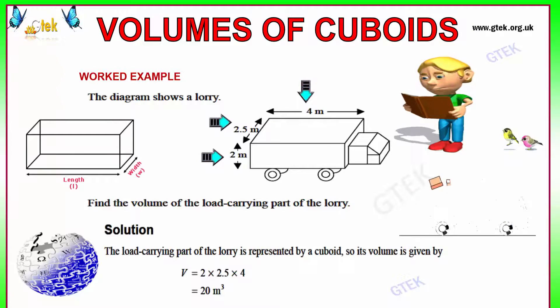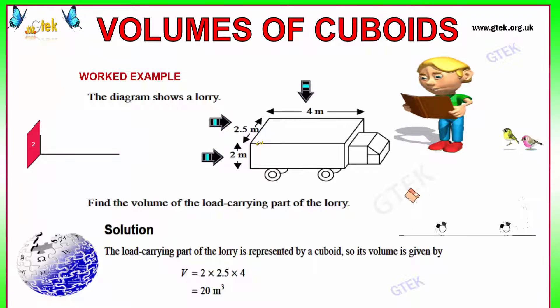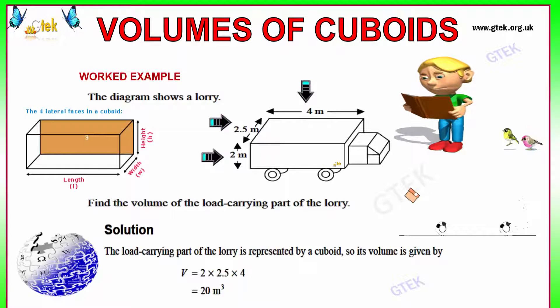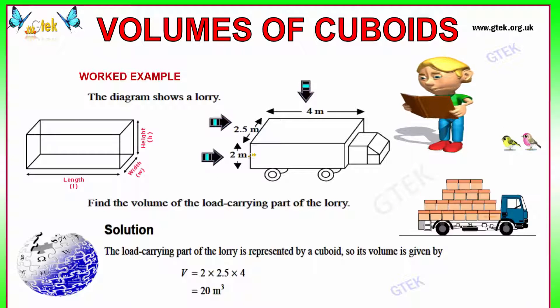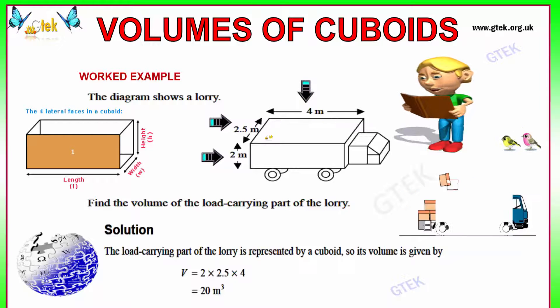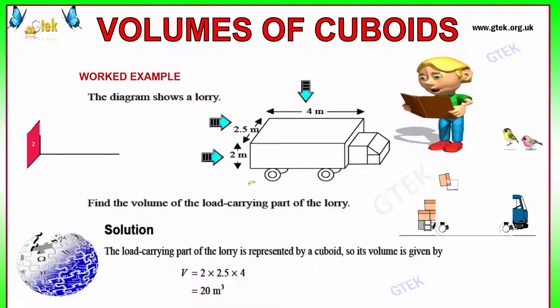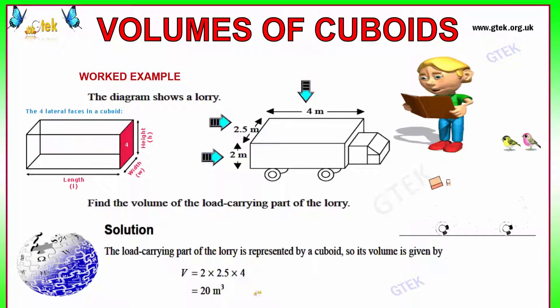Let's move on to a small example of finding the volume of the cuboid. There is a lorry and its height is 2 meter, and the width is 2.5, and the size is 4 meter. The question is: what is the volume of the load carrying part of the lorry? We need to identify. So height into length into breadth: 4 into 2.5 into 2. The answer is 20 meter cube.